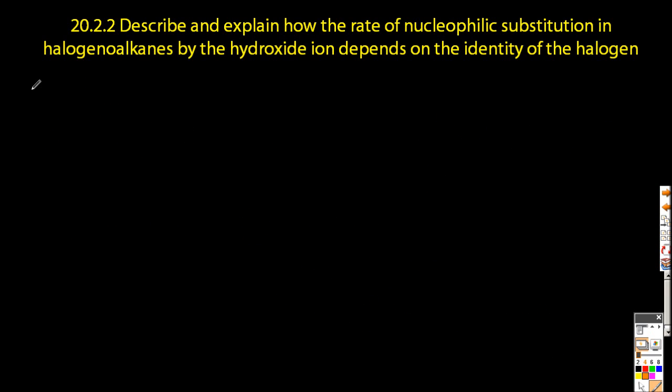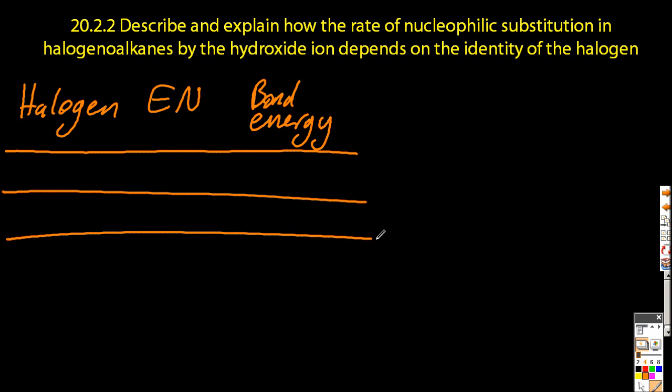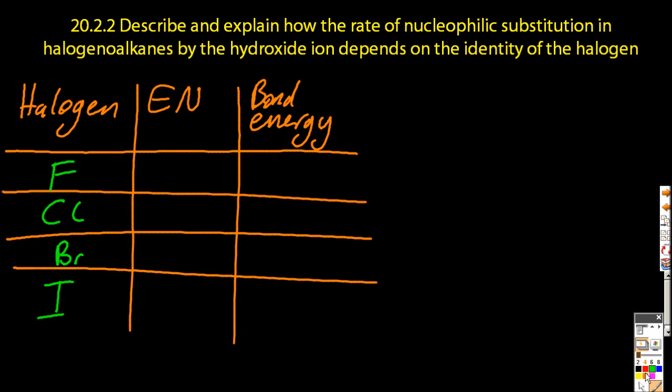Let's take these one at a time. I'm going to draw this table out super fast. We'll just look at the four halogens in order, going down the group.